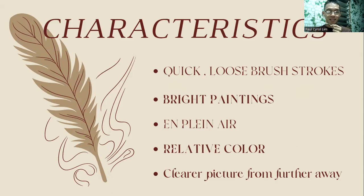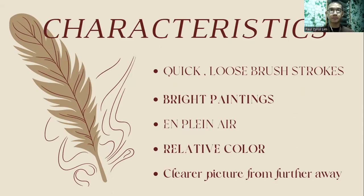En plein air, which refers to painting outside, is the third element of Impressionism. Prior to Impressionism, paintings were typically created in a studio — regulated settings frequently involving models and apprentices. Yet the Impressionists chose to move their paintings outside. They sought to preserve a moment in time as well as its mood or impression, and they had to be there on the scene to accomplish it. As a result, they painted en plein air, or outside, and Impressionism has several landscapes and outdoor subjects.